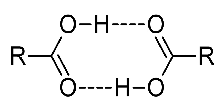A dimer is an oligomer consisting of two monomers joined by bonds that can be either strong or weak, covalent or intermolecular. The term homodimer is used when the two molecules are identical and heterodimer when they are not. The reverse of dimerization is often called dissociation. When two oppositely charged ions associate into dimers, they are referred to as ion pairs.